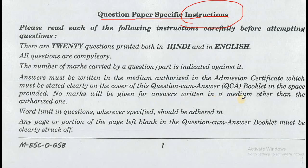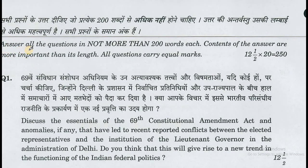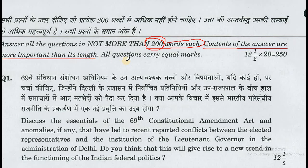No marks will be given for answers written in a medium other than the authorized one. Word limits in questions, wherever specified, should be adhered to. Any page or portion of the page left blank in the question-cum-answer booklet must be clearly struck off. The word limit in questions is 200 words, and the content of the answer is more important than its length. All questions carry equal marks: 2.5 marks multiplied by 20 equals 50 — meaning each question carries 12.5 marks.